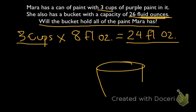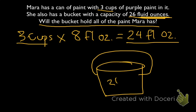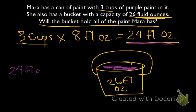Now we figure out whether the bucket, which has a capacity of 26 fluid ounces, will hold all the paint. The only reason it would overflow is if Mara has more paint than the bucket can hold. We compare: her paint is 24 fluid ounces, and the bucket's full capacity is 26 fluid ounces. Since 24 is less than 26, she would have 2 extra fluid ounces of space, which means the bucket can hold all of the paint that Mara has.